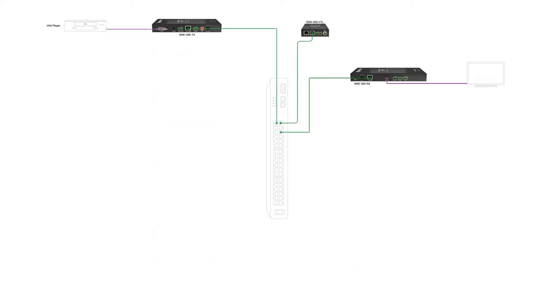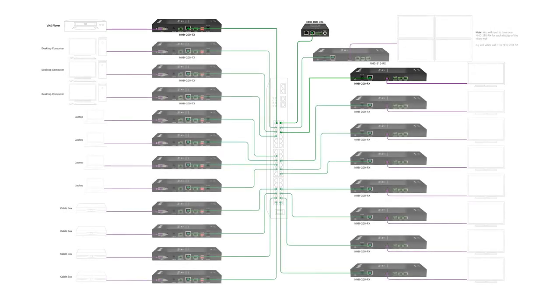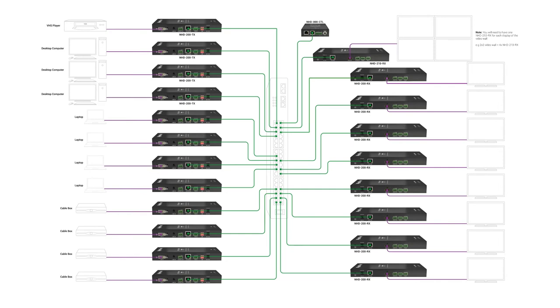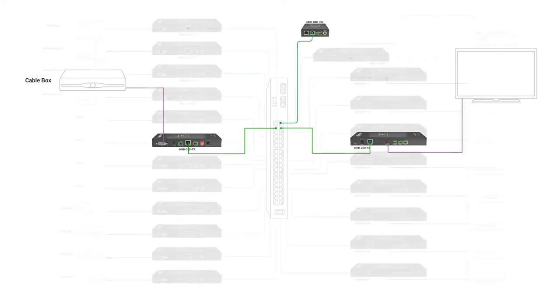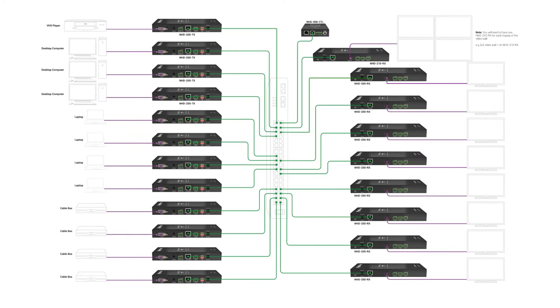A key feature of Network HD is the flexibility to add more sources and screens. If a new source is needed, all that is required is an additional Network HD encoder. If a new screen needs to be added, simply connect a Network HD decoder to the network and display and you're up and running, no incurring significant costs because your AV hardware has reached its maximum limit. By having fewer parts, the whole system becomes much more efficient and reliable.